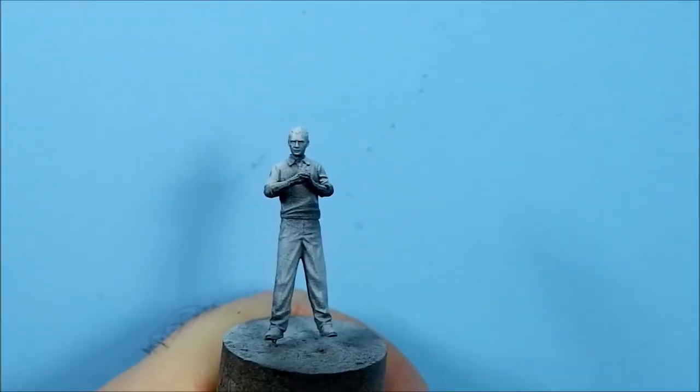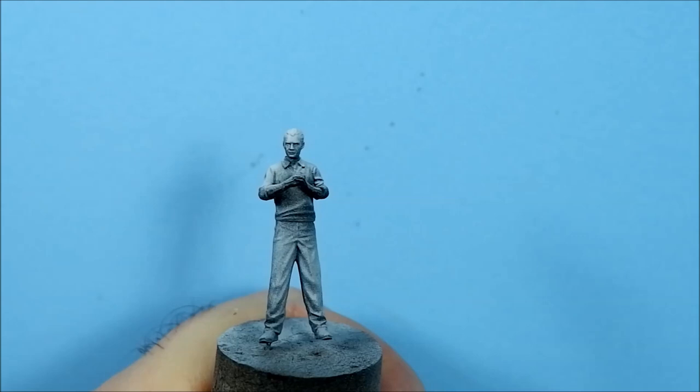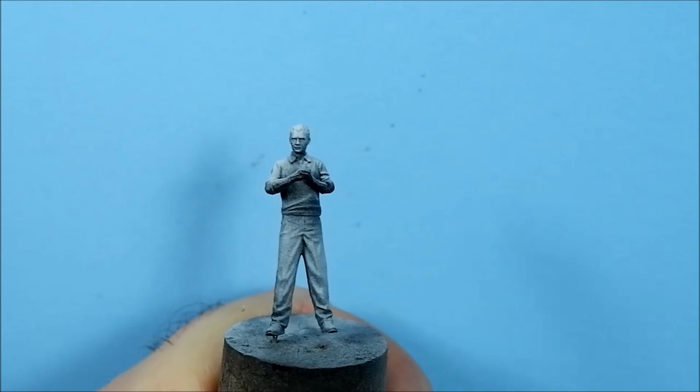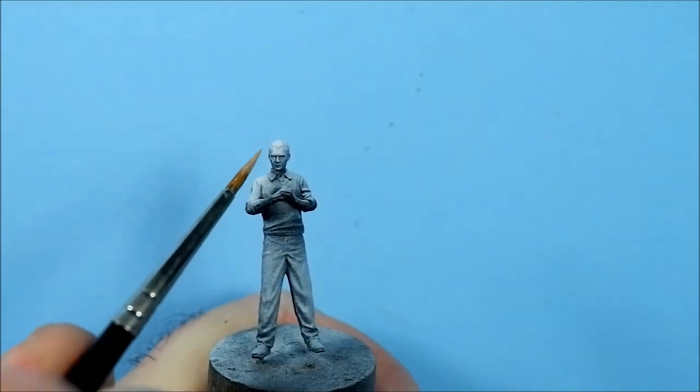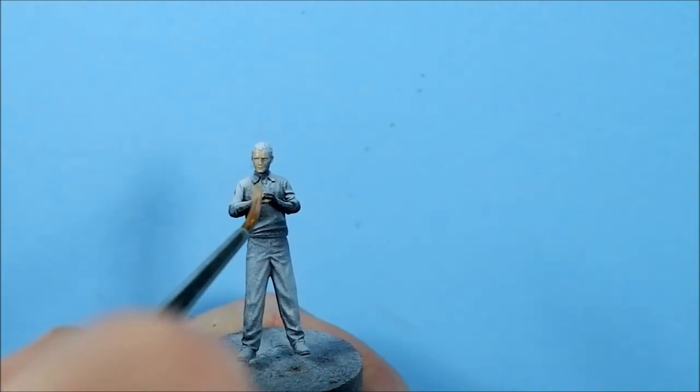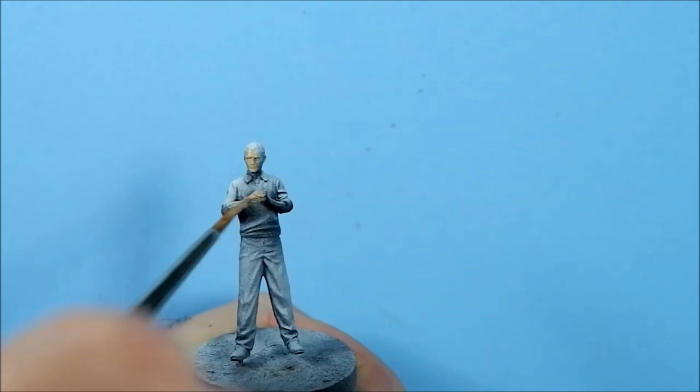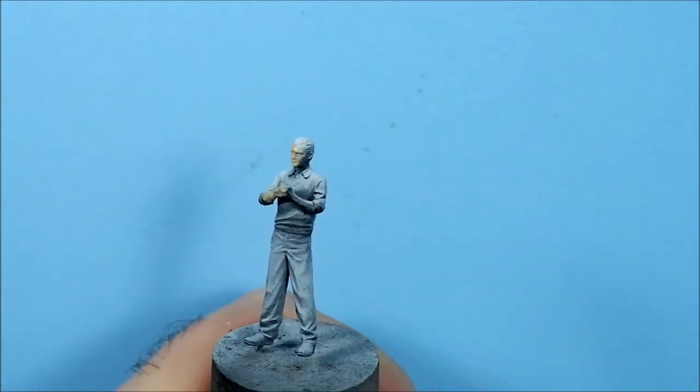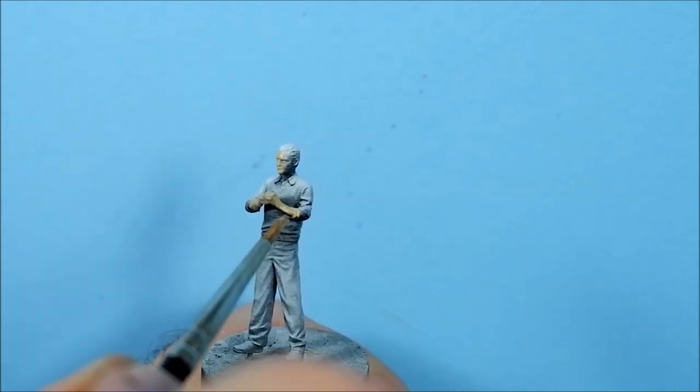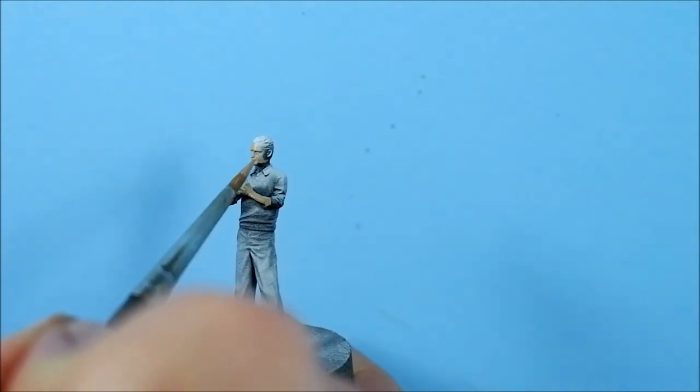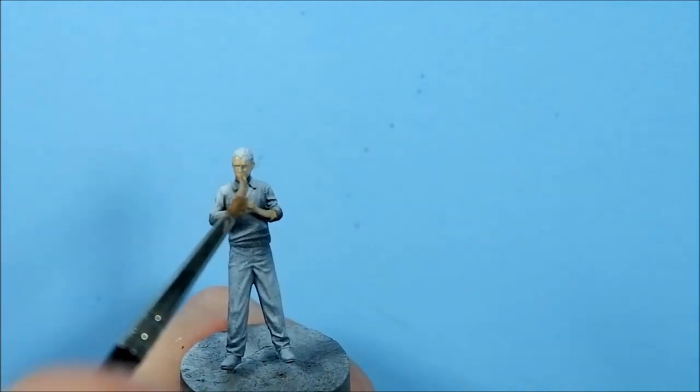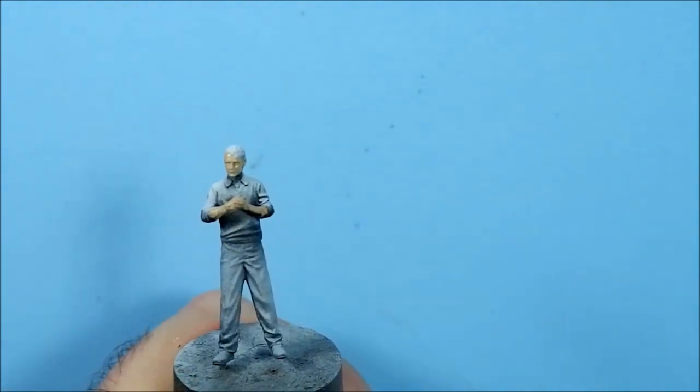Okay, Mr Goyle. I'm going to do the skin first and it's a 50-50 mix of Citadel's Cadian Flesh and Kislev Flesh. Just after a nice coverage and it'll probably take two coats for this to work. There's one.